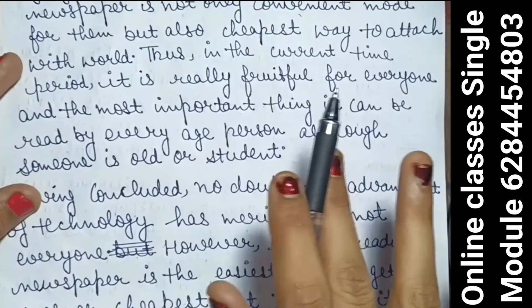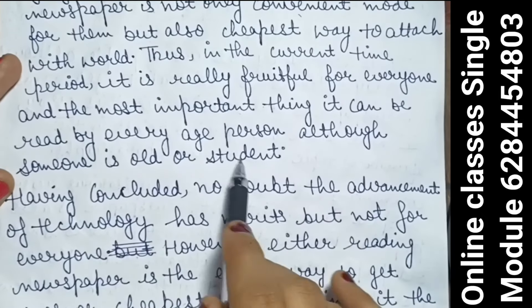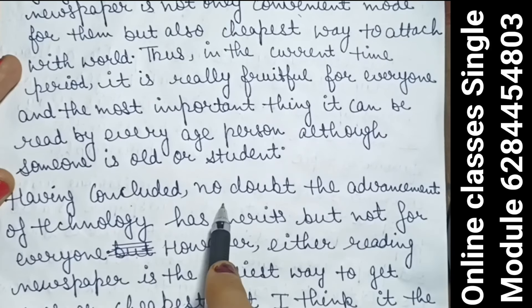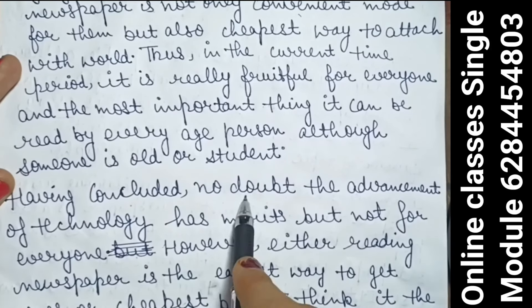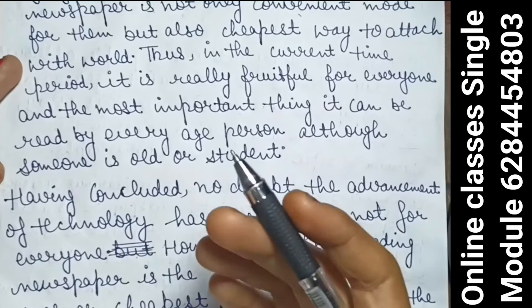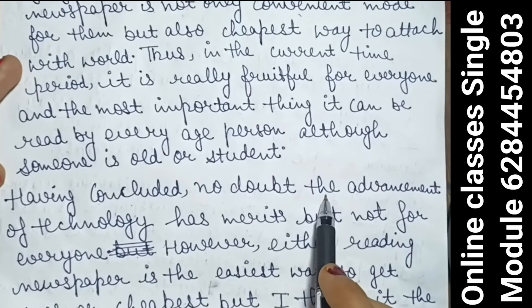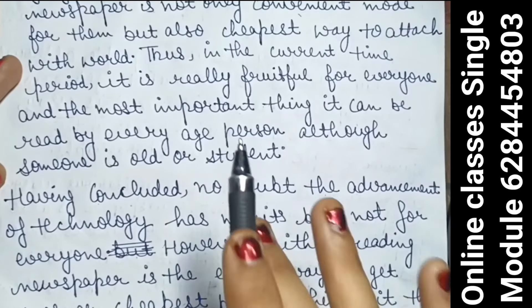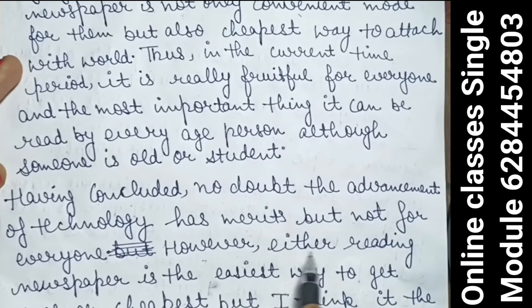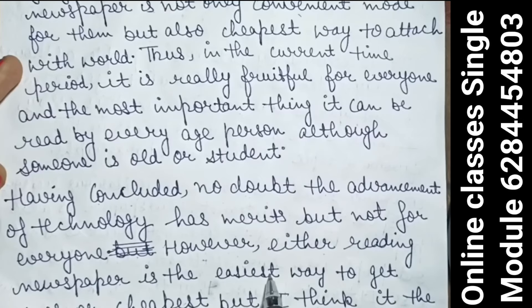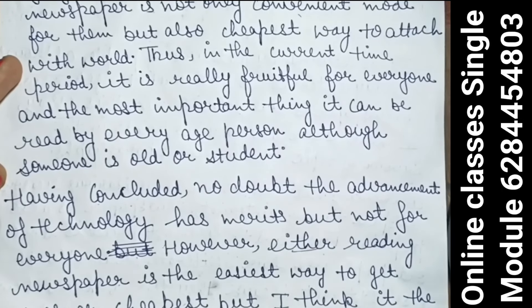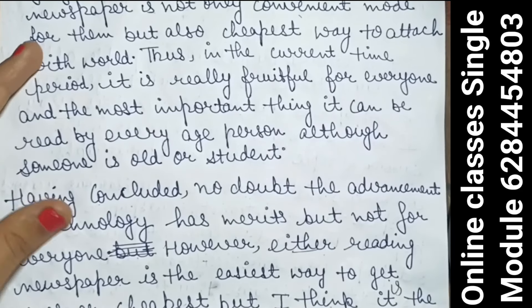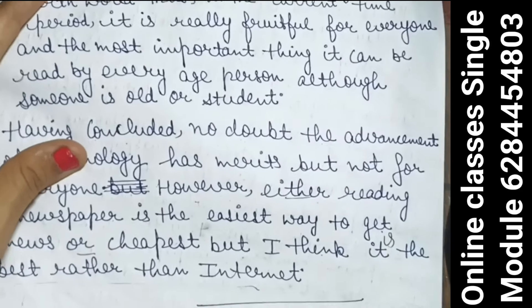Having concluded — no doubt, the advancement of technology has married many but not for everyone. Either reading the newspaper is the easiest and cheapest way to get news. But I think it is the best rather than the internet.